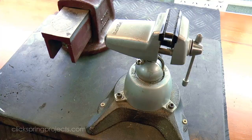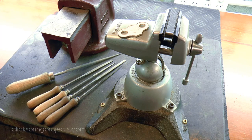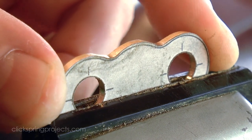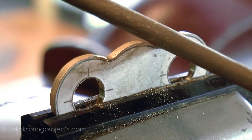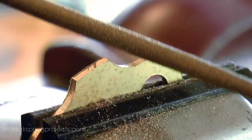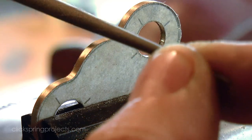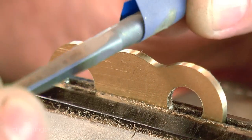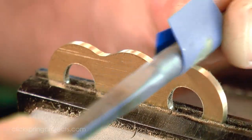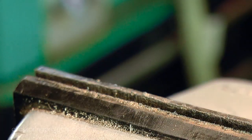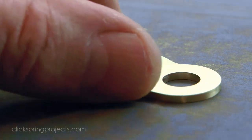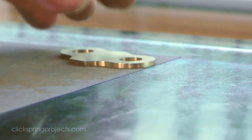The scroll saw and belt sander take care of most of the metal removal, and then it's on to some hand filing to bring the workpiece to the line. A light rub on some fine abrasive paper tidied up the surfaces, although the soldering process will require a bit of cleanup once complete, so I didn't put in too much time, just enough to make the job a bit easier later on.